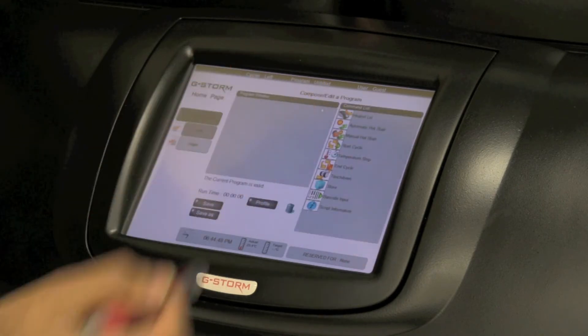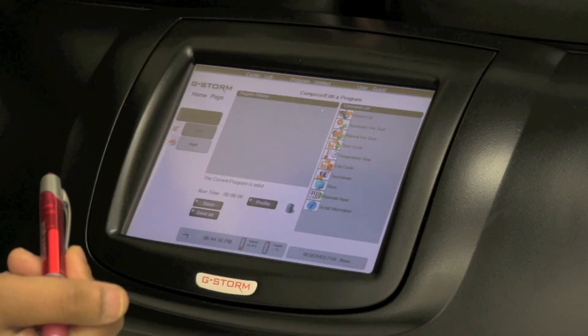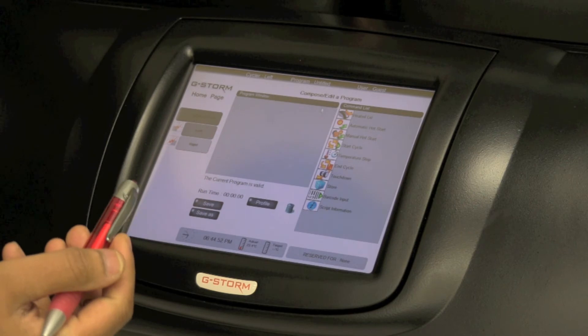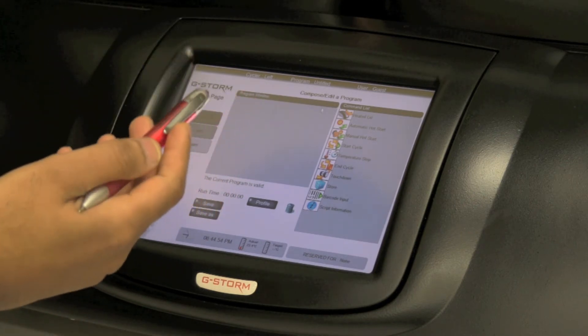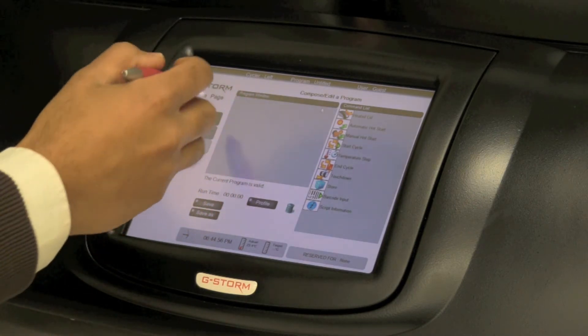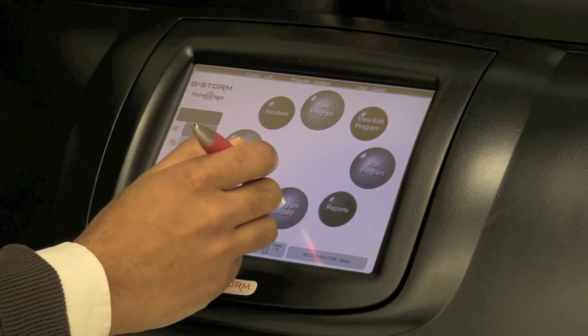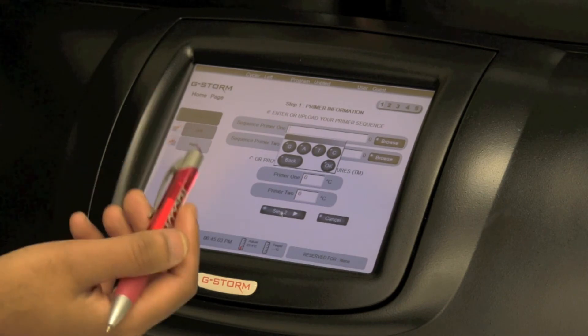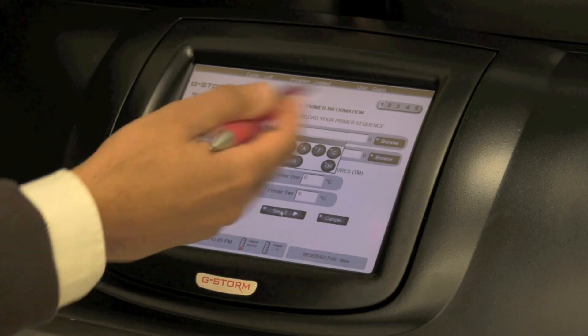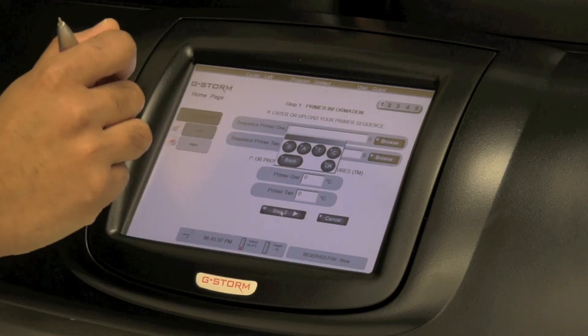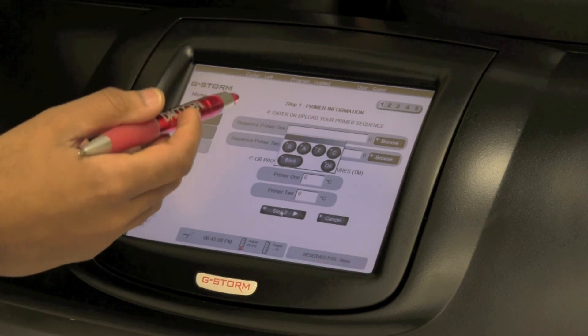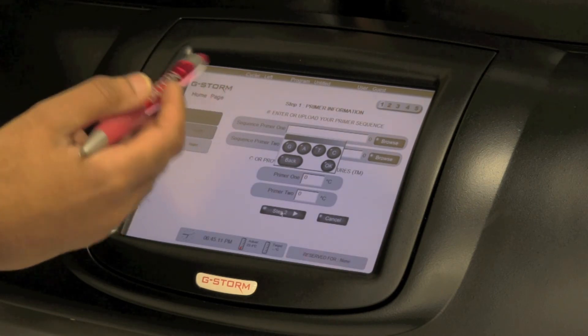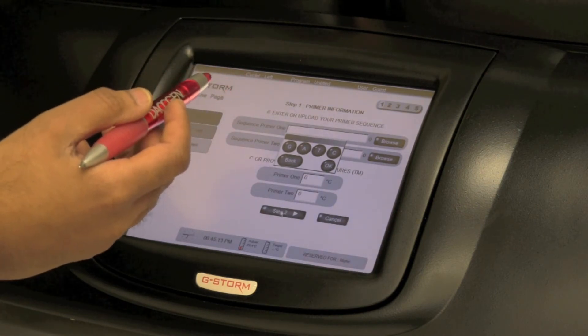If we click on new program for example, the G-Storm will begin to start to walk us through a number of logical steps that will help us achieve what we're trying to gain. Something that makes things even simpler is the program wizard. Now with the program wizard, all you need to do is literally enter a number of very simple parameters. The G-Storm will then perform a number of calculations for you and help you achieve your procedure in just a few simple clicks.